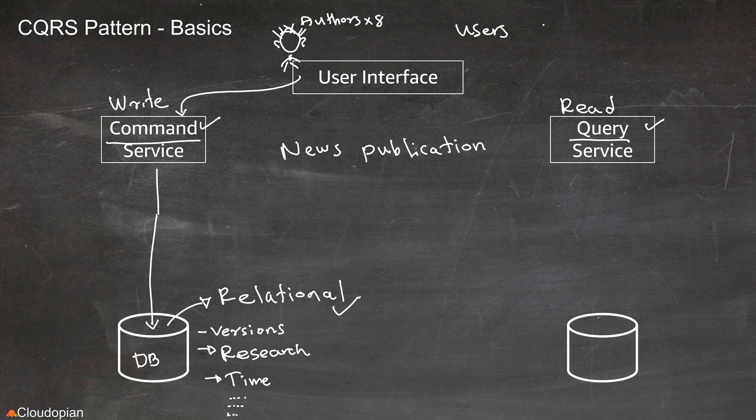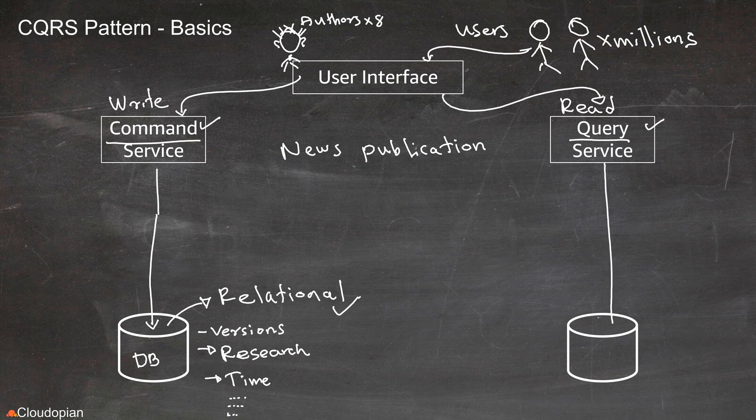But let's now look at the read operations of this application. Imagine that you have these news articles that the authors publish and there are going to be millions of users who are going to read this. Now, of course, you don't need to have a large database for the write operation. You can maintain the write operation in a small database. Whereas for the read operations, you may need to have a database that can scale in and out.